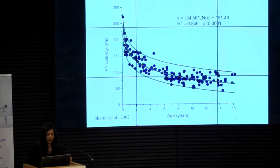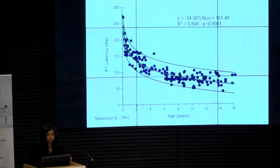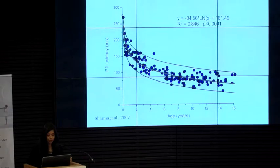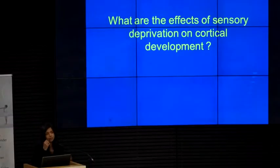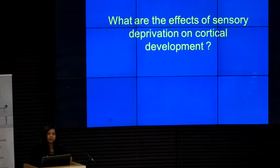Here you have latency on the y-axis and age on the x-axis, and in large groups of children we found a very nice developmental trajectory. It decreases quite rapidly until the second year of life and then more gradually into the second and third decade. The latency decreases with age, telling you about the maturation of the auditory cortex. These two lines represent the 95% confidence intervals for normal development. Since we understand normal development using this response, we can then ask: what happens in sensory deprivation?